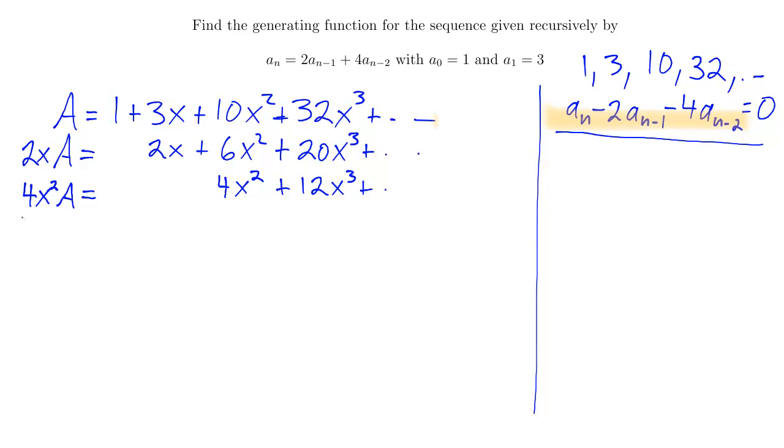Now what I want to do is I want to take my original generating series and I'm going to subtract off 2xA and I'm going to subtract off 4x squared A. And I'll see what that leaves me with. On the left hand side, I'll have 1 minus 2x minus 4x squared, that entire thing, times A. And let's see what that's equal to. Well, 1 minus 0 minus 0, that's 1.